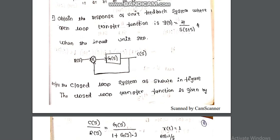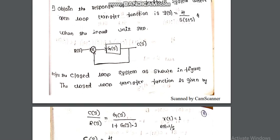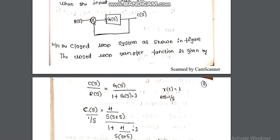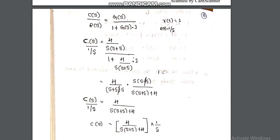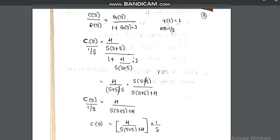The input is unit step input, so R(s) = 1/s, since the Laplace transform of a unit step is 1/s. Now substitute the given values of G(s) and R(s) into the equation for C(s)/R(s).